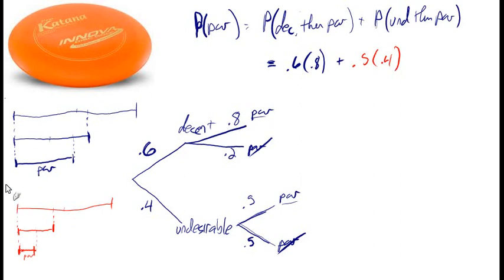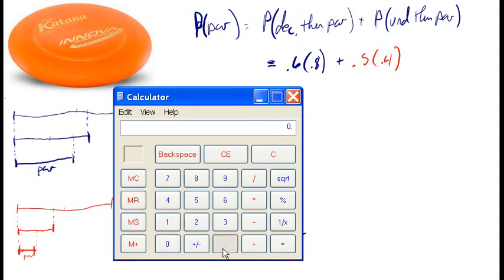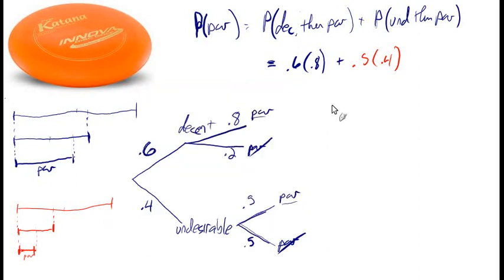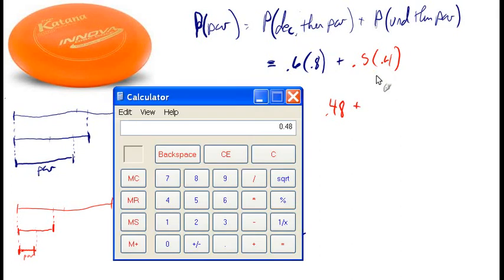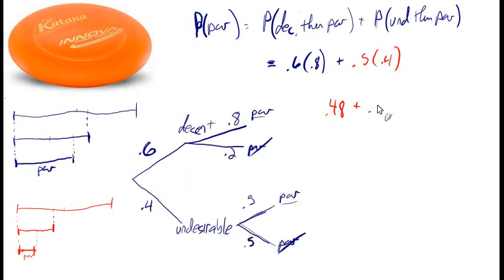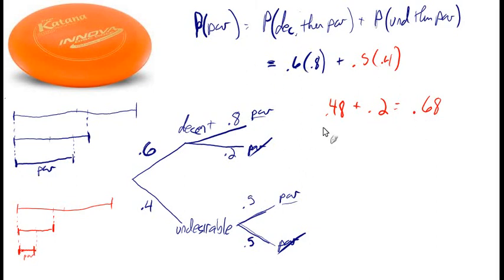Let's pull up the calculator. We do 0.6 × 0.8 = 0.48, plus 0.5 × 0.4 = 0.20, giving us 0.68. So if these numbers were correct — I totally made them up — there'd be a 68% chance of getting par on a hole. We'll do probably one more of those in the sample problems video, as well as others. Thanks for watching, I hope that was helpful.